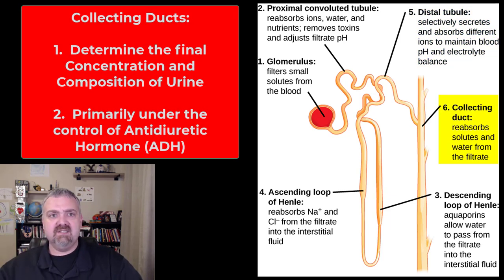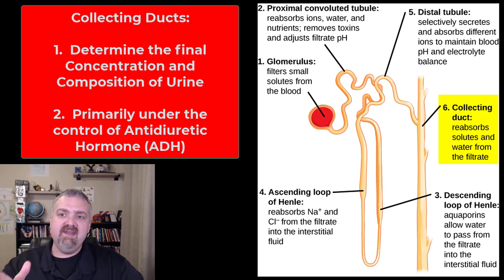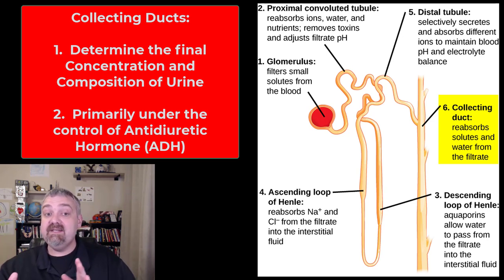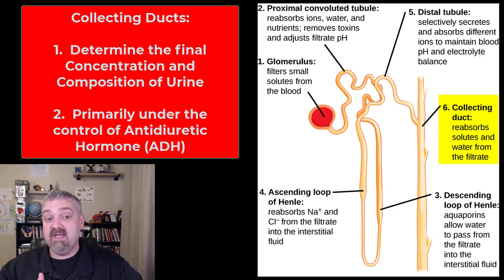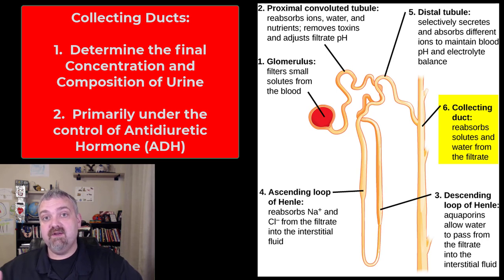Then we get to the collecting ducts. They're not actually part of the nephron, but nephrons connect to them. Their job is to determine the final concentration of your urine. With perfectly functioning kidneys, by the time you reach the end of the distal convoluted tubule, you've turned 50 gallons of filtrate into 27 liters — but we can't afford to lose that either. So we actively reabsorb water here. ADH determines how much of that 27 liters you reabsorb. This is why I tell people: how often are you urinating tells you whether you're hydrated.